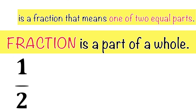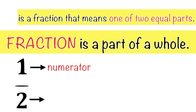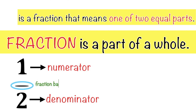When we say one half, one is what we call the numerator, while two is what we call the denominator, and the bar between one and two is what we call the fraction bar. The number at the top of the fraction bar is what we call the numerator, while the number at the bottom of the fraction bar is what we call the denominator.